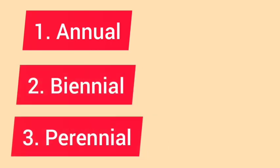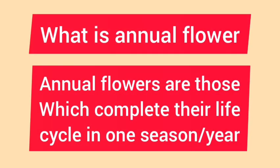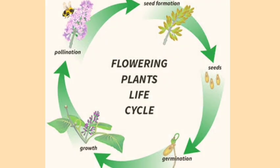In this video, we'll be dealing with annual flowers. Annual flowers are those which complete their life cycle in one season or year. In this picture, you can see the life cycle — from seed to germination to flower formation to again seed formation.